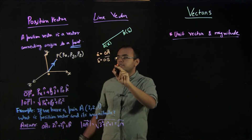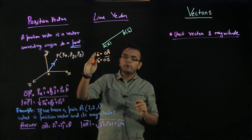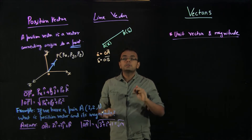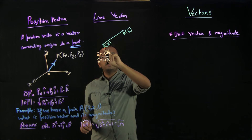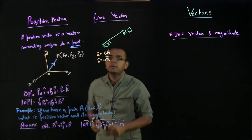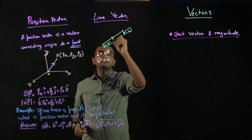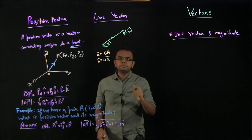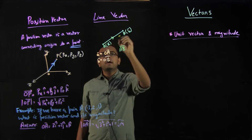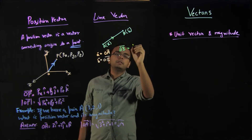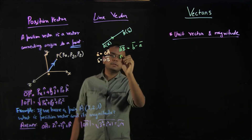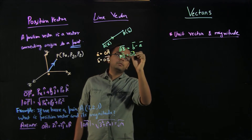OA and OB vectors are position vectors of points A and B. Even this basic thing people get really confused about. Whenever you see point A with something written in the bracket, that always means it is a position vector. So line vector means connecting two points. If we have AB vector — starting from A and ending at B, so the direction arrow goes from A to B — then this vector is defined as b-vector minus a-vector, or in other words AB vector is OB vector minus OA vector.